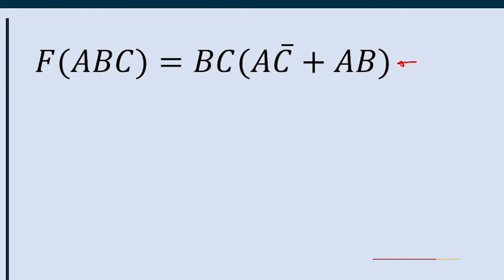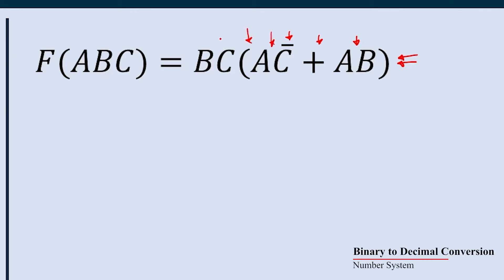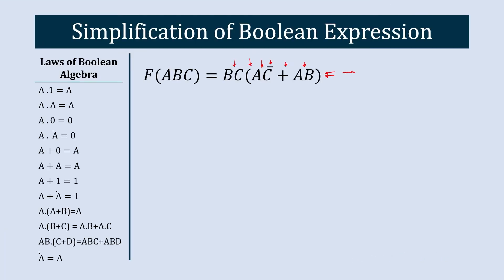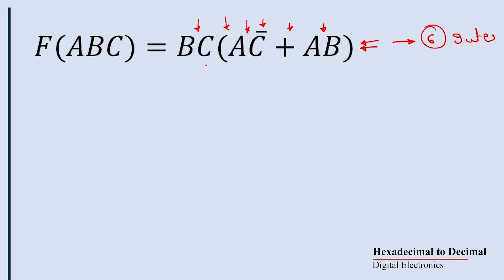Before we start the simplification process, let's count how many actual gates we require to implement this exact equation. We need an AND gate, OR gate, NOT gate, AND gate, another AND gate, and another AND gate — so one, two, three, four, five, six. We need six gates to implement this expression. Now let's simplify it and see how much reduction we can achieve.